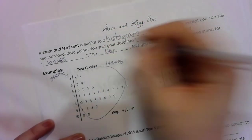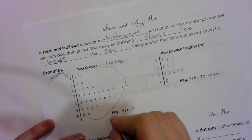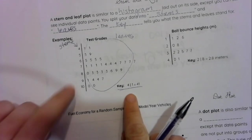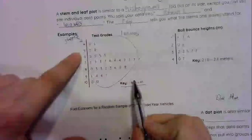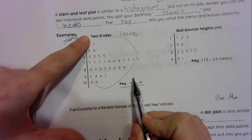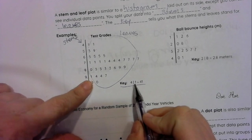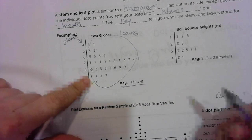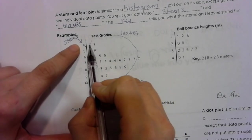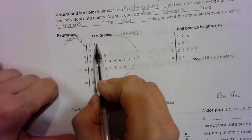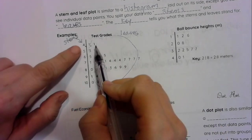And then the key tells you what the stems and leaves stand for. Like right here. This key is telling us four, and this represents this line right here, this bar. And one, that means 41. So that means 41, 41. In this data set, we have 41 twice.